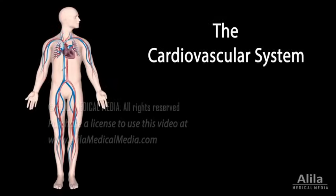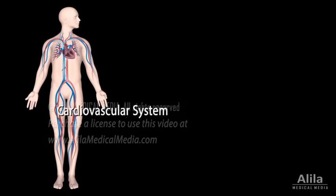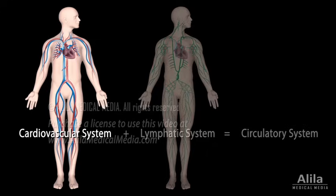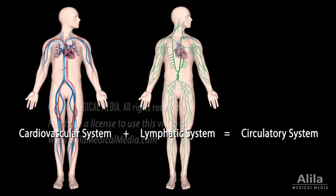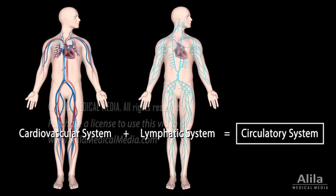The cardiovascular system is part of the circulatory system that circulates blood. The circulatory system also includes the lymphatic system, which circulates lymph, but the terms circulatory system and cardiovascular system are commonly used interchangeably to describe blood circulation.